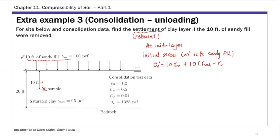If you plug in numbers: 10 times 100 plus 10 times 95 minus 62.4. This gives the effective stress with that 10 feet of sandy fill — the initial state — which equals 1326 psf.